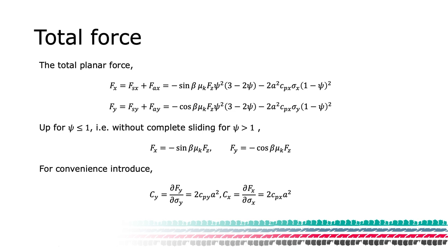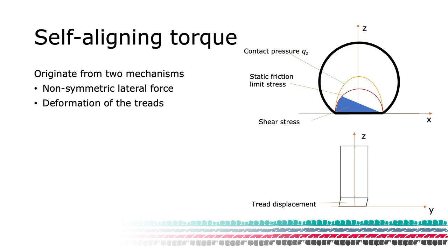For convenience, we introduce the lump stiffness of the tire with respect to the slip, CX and CY. These are often called cornering stiffness and slip stiffness for the longitudinal and lateral directions, respectively.